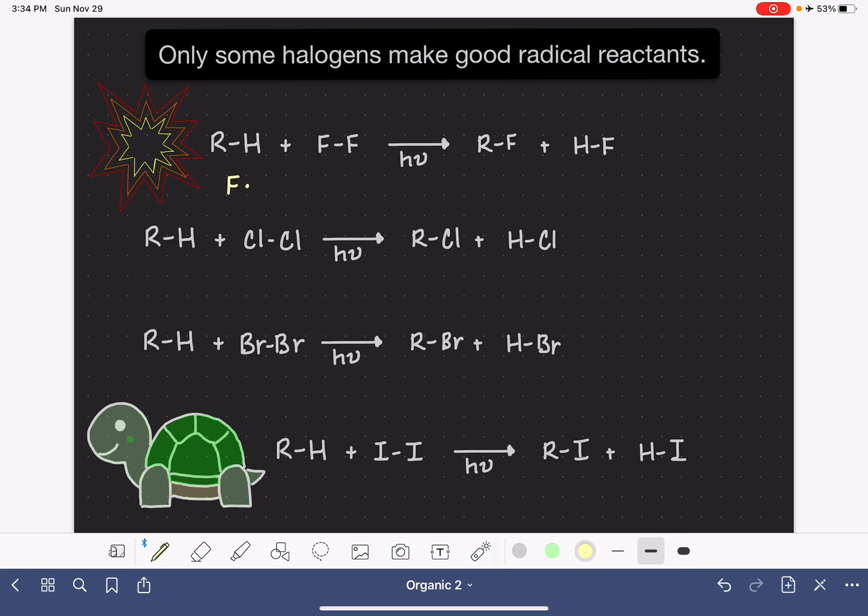Because of the small size of the fluorine atom, the fluorine radical is too unstable. It is so unstable that it is violently, explosively reactive, and therefore makes it unsafe to use in this type of reaction.